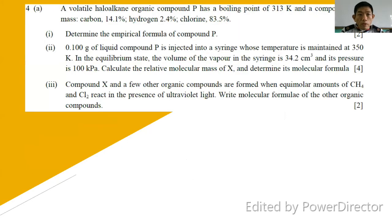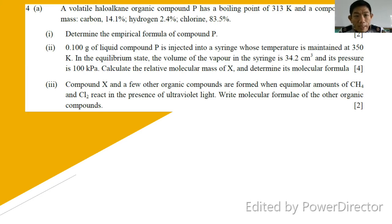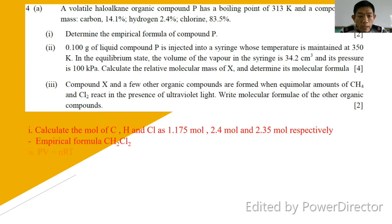Finally, question number four: volatile haloalkane organic compound P has a boiling point of 313 K and a composition by mass of carbon 14.1%, hydrogen 2.4%, and chlorine 83.5%. Part one: determine the empirical formula for compound P. Using the table with atom, mass, mole, and ratio, you get the empirical formula CH2Cl2.